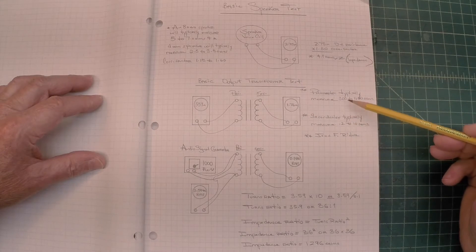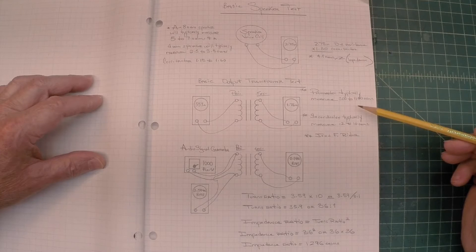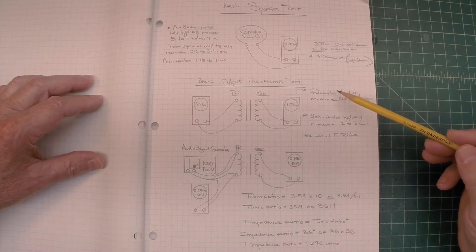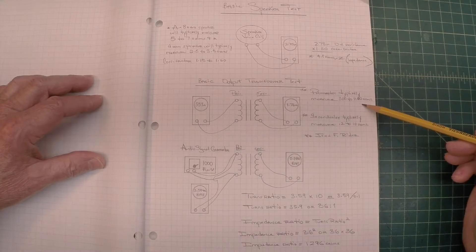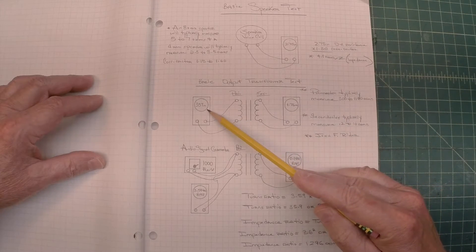John F. Ryder did a lot of studies, and what he typically found: the primaries are typically 300 to 1,100 ohms, so you can see I'm in that window.